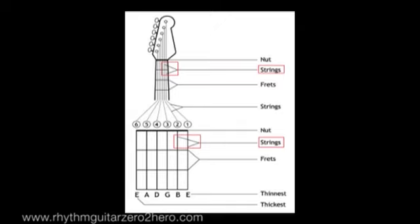...which is the E string. The E string is also the thickest string on the guitar and it's got the lowest sound. Right, next up we have the fifth string, which is the A string. After that we have the fourth string, which is the D string. Then we have the third string, which is the G string. Then next...